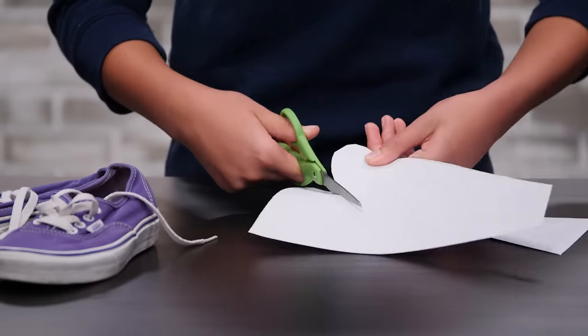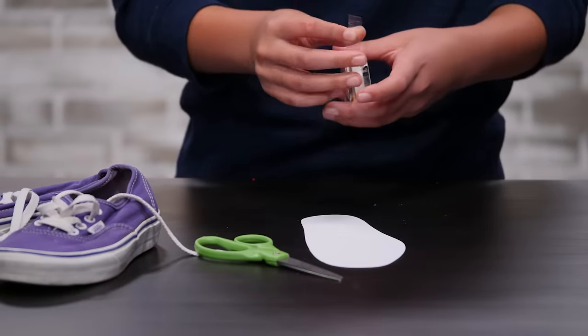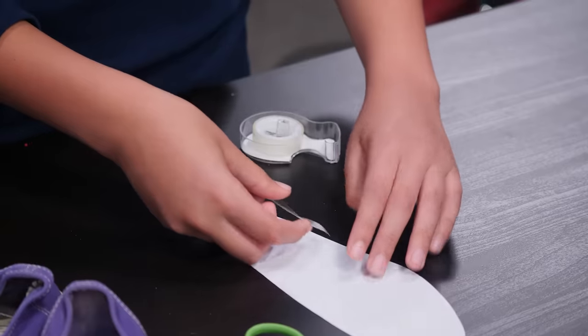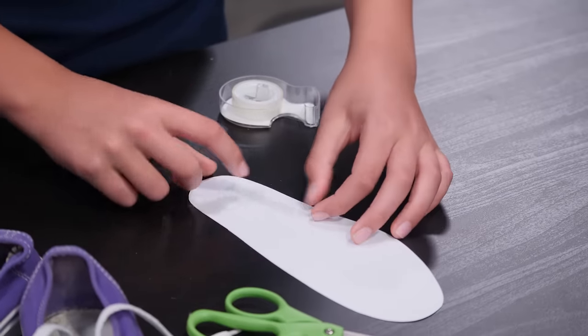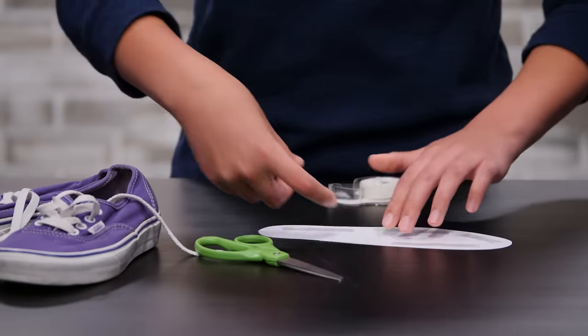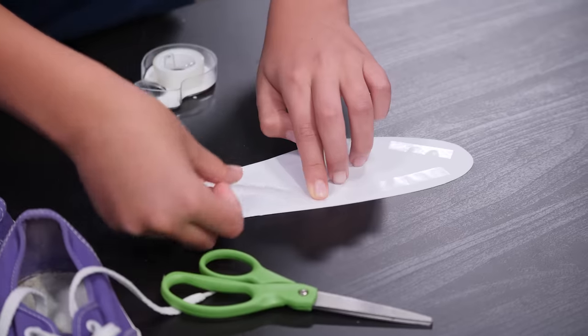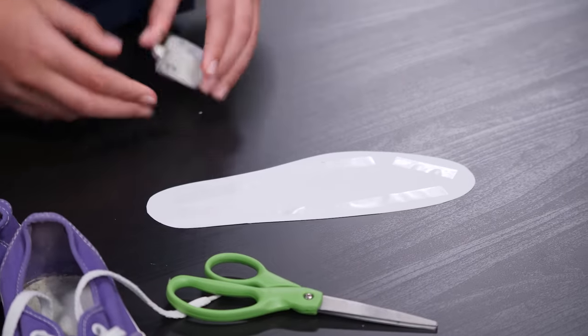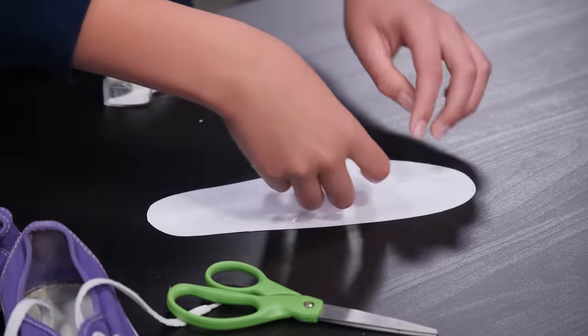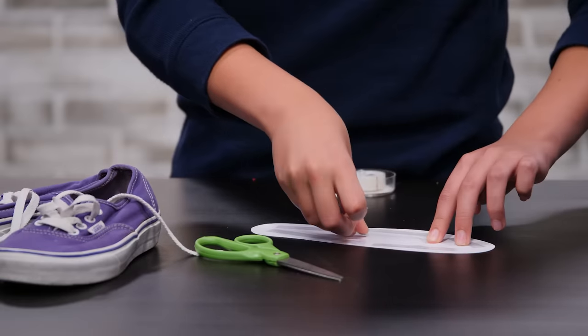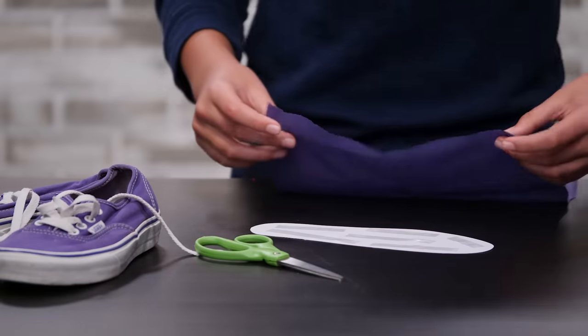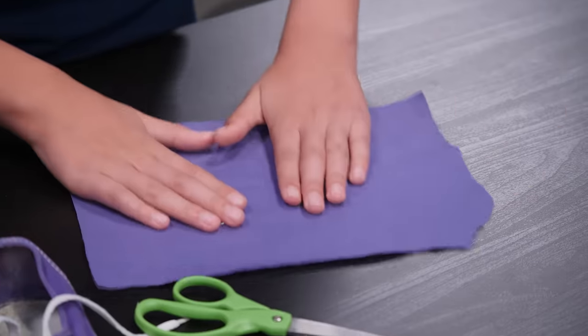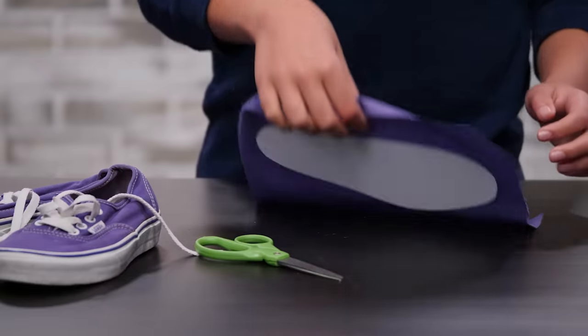Cut out the paper sole and cover the top in double-sided tape. Tape around the rim. Now carefully place the fabric over it and press down. Your fabric should be the color of your shoe sole. Flip it over.